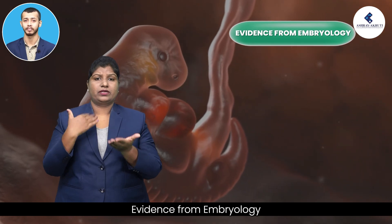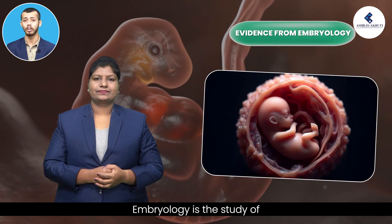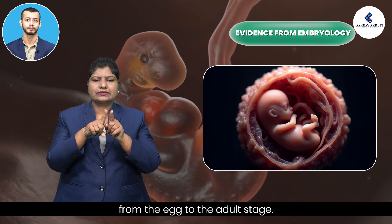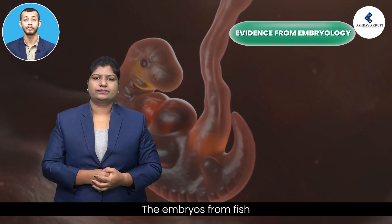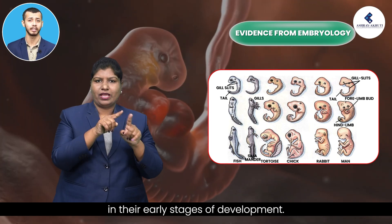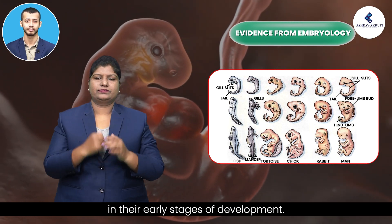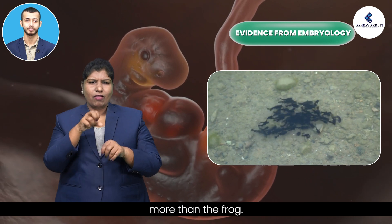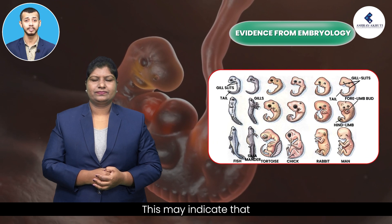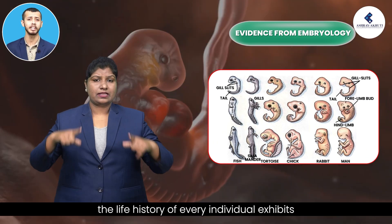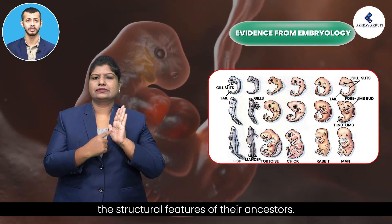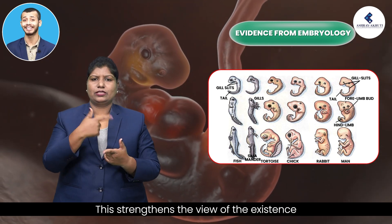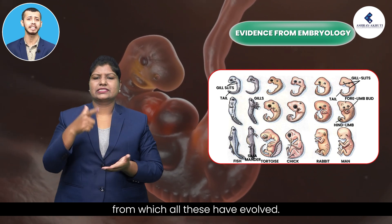Evidence from embryology: embryology is the study of the development of an organism from the egg to the adult stage. The embryos from fish to mammals are similar in their early stages of development. The tadpole of a frog resembles a fish more than the frog itself. This may indicate that the life history of every individual exhibits the structural features of their ancestors, strengthening the view of a common ancestor from which all these have evolved.